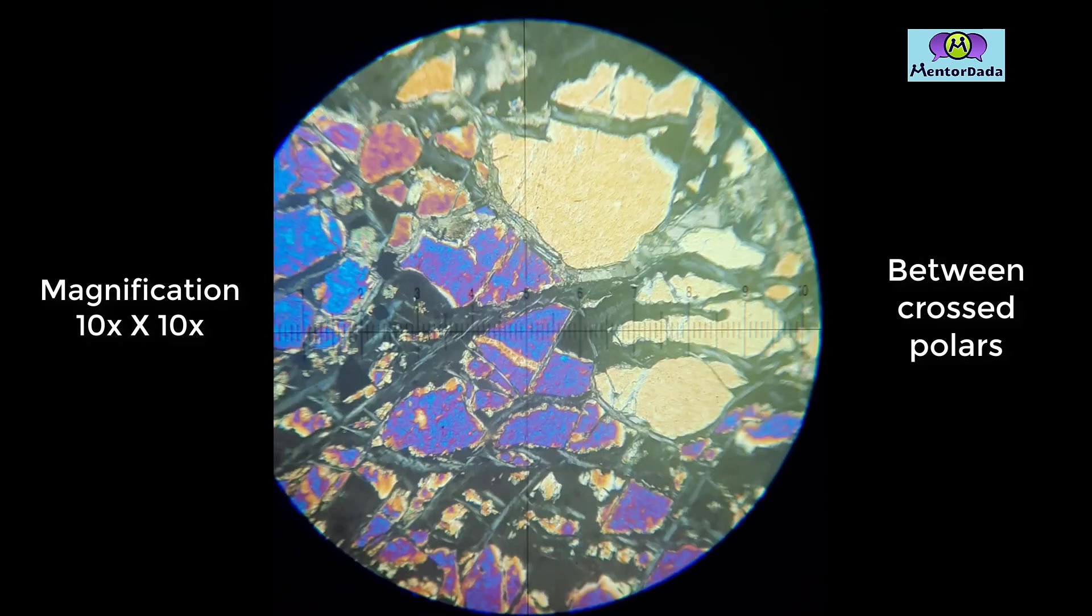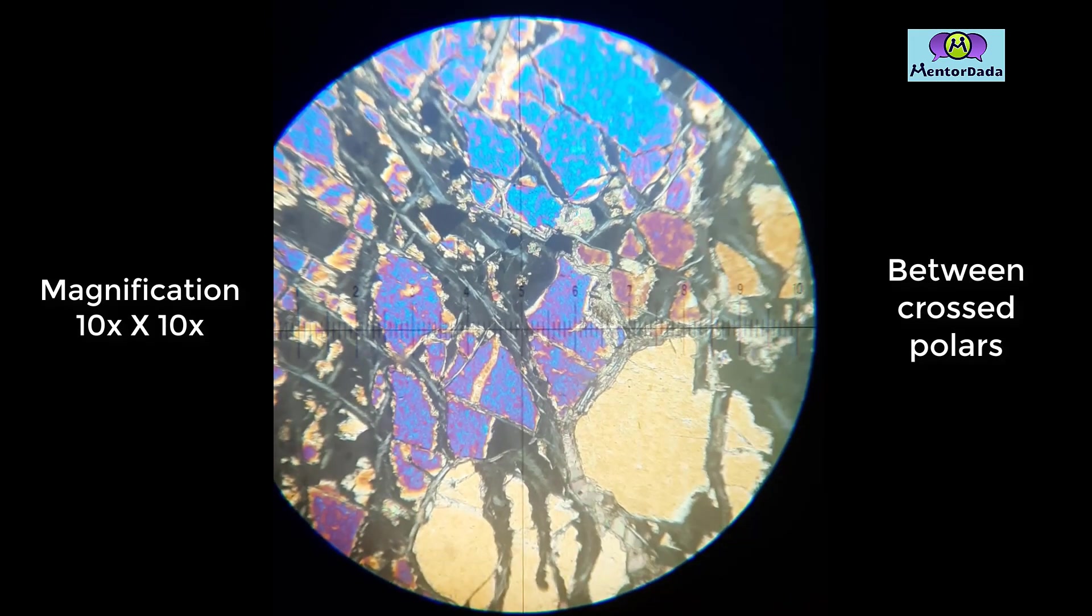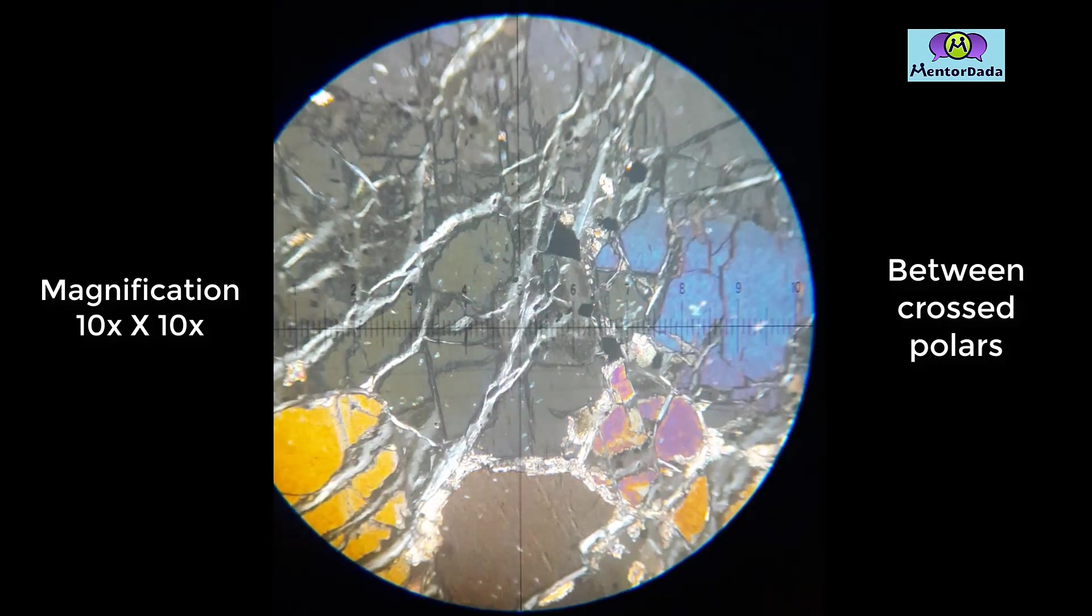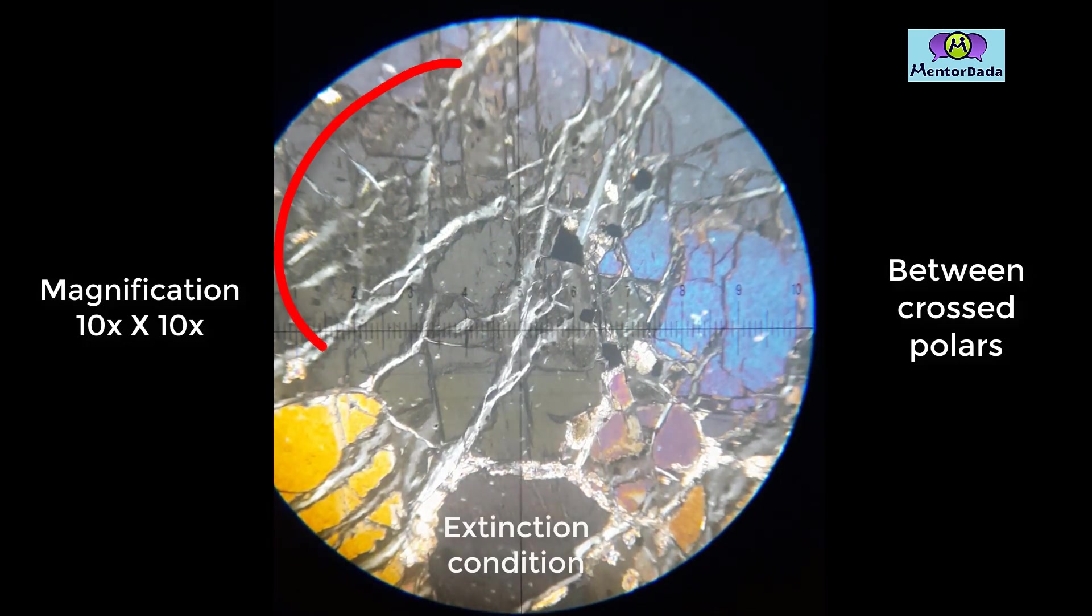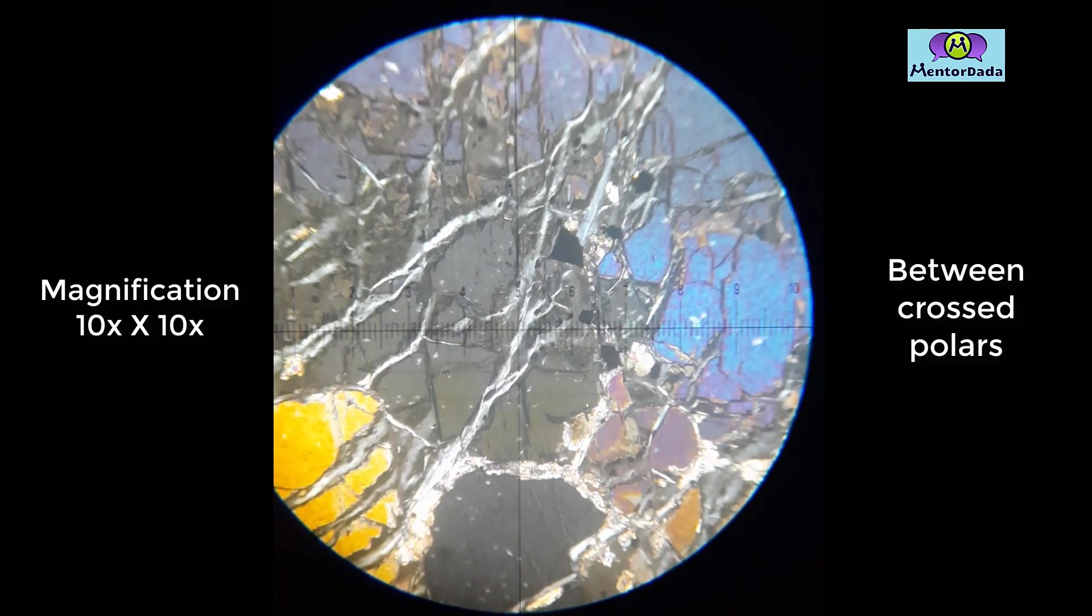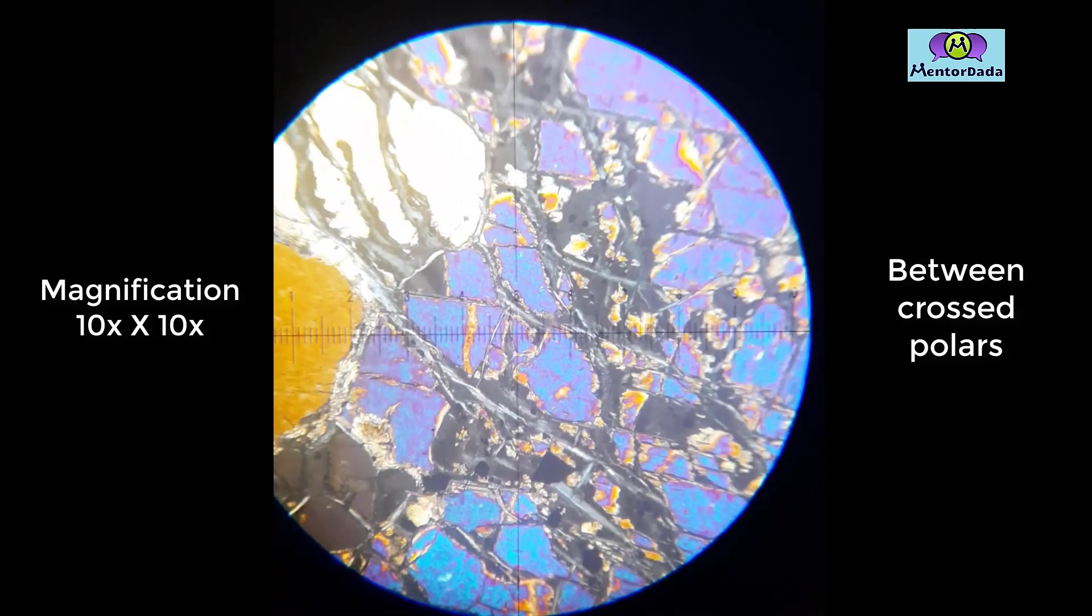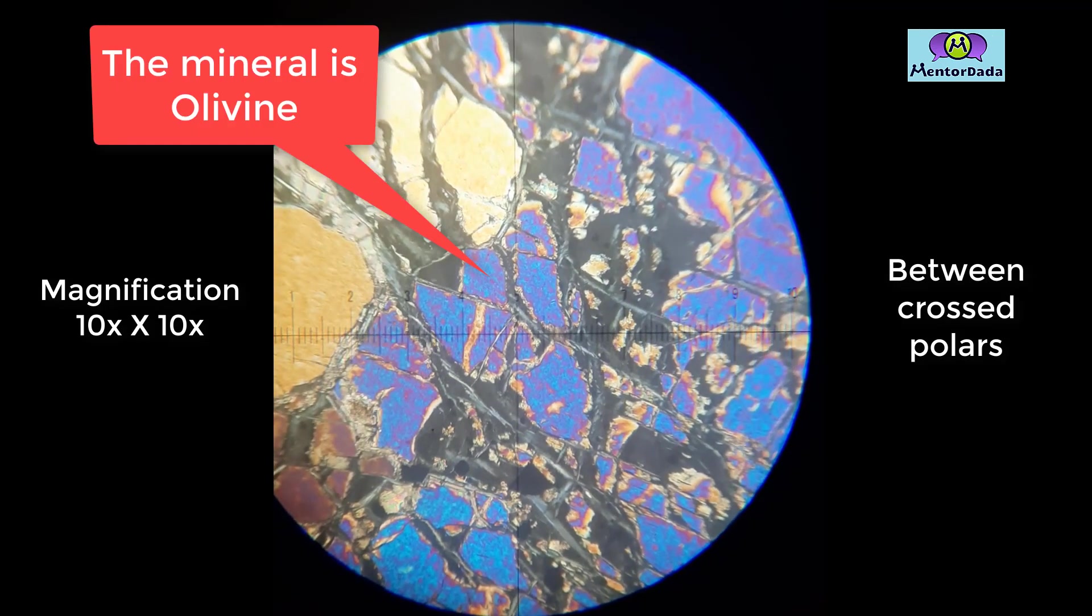The mineral also shows straight extinction because when the mineral goes extinct, its cleavage is parallel to the analyzer direction. There is no twinning found in this mineral, so the mineral is olivine. Thank you.